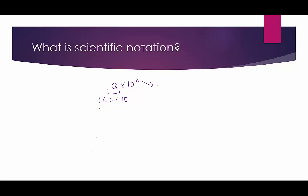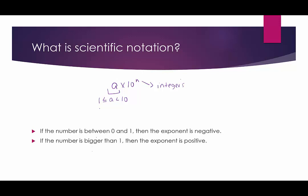The n is an integer — meaning 0, 1, 2, 3, or negative 1, negative 2, negative 3. If the given number is between 0 and 1, then the exponent is negative, because that's dividing by 10. So we're taking a number between 1 and 10 and dividing it by 10 a bunch of times to get it to become a decimal.